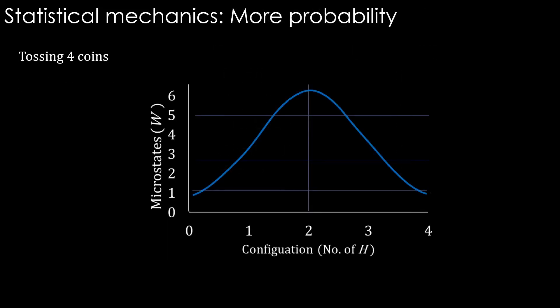Graphically, these can be represented like this: macrostates in x-axis with number of heads, microstates in y-axis. Note that we get the maximum at the middle for 2 heads and 2 tails case.